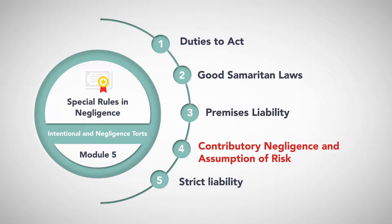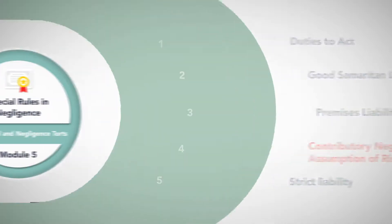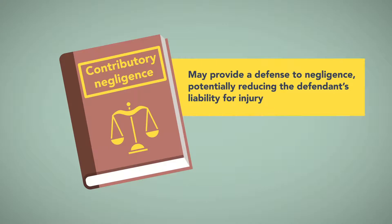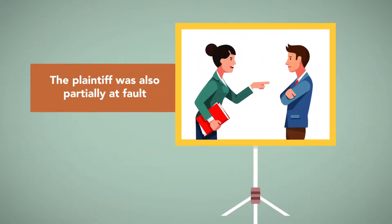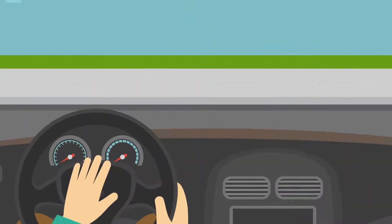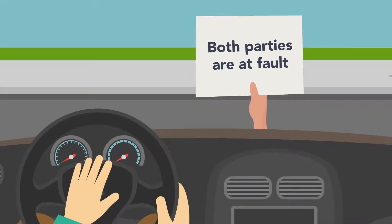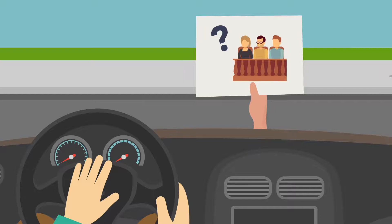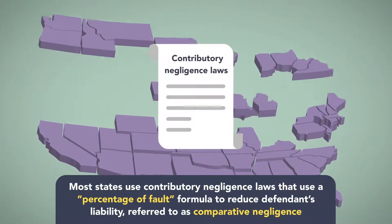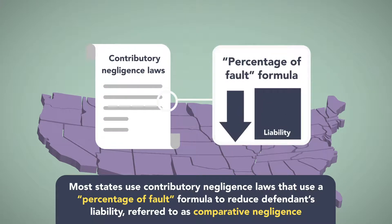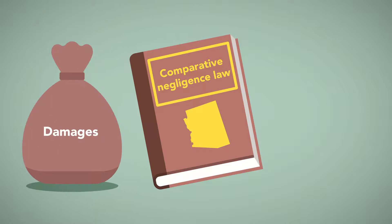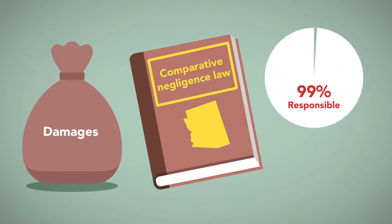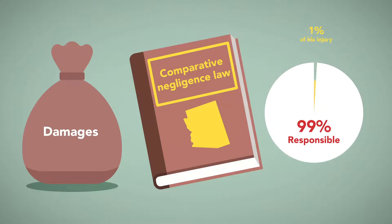Contributory negligence and assumption of risk. Contributory negligence may provide a defense to negligence, potentially reducing the defendant's liability for injury. This means that the plaintiff was also partially at fault. For example, if the plaintiff was jaywalking and is hit by a speeding defendant's car, both parties are at fault. How much each person's negligence contributed to the accident is a fact-based question for a jury. Most states use contributory negligence laws that use a percentage-of-fault formula to reduce the defendant's liability, referred to as comparative negligence. Arizona's comparative negligence law allows a plaintiff to recover damages even if it is found that he was 99% responsible for the event; he can still recover 1% of his injury.